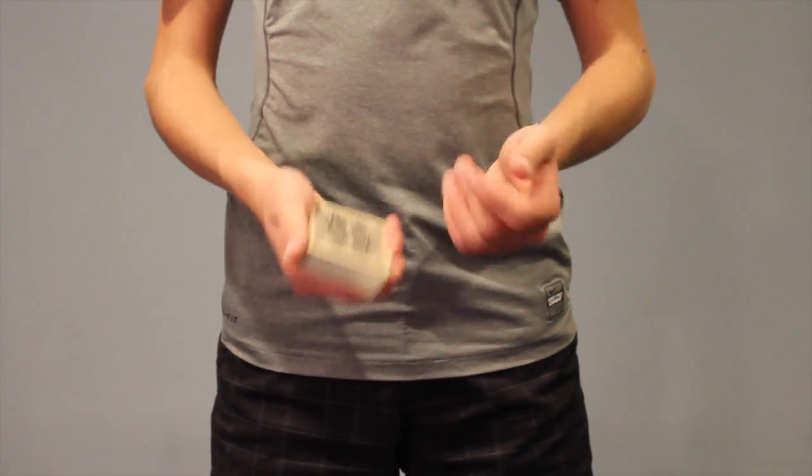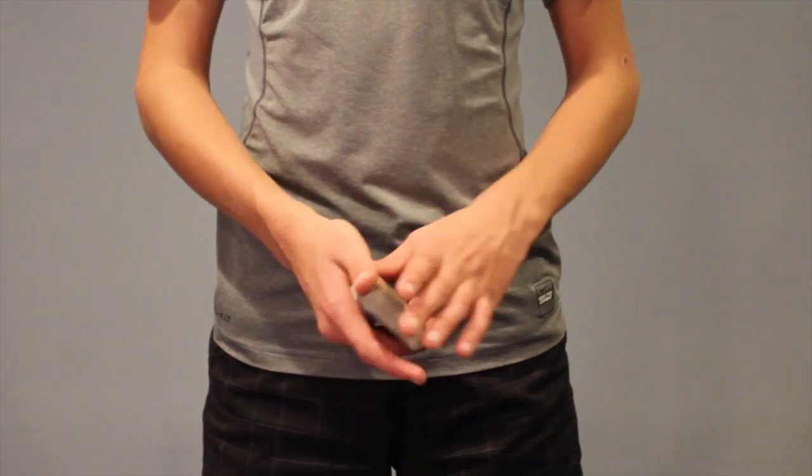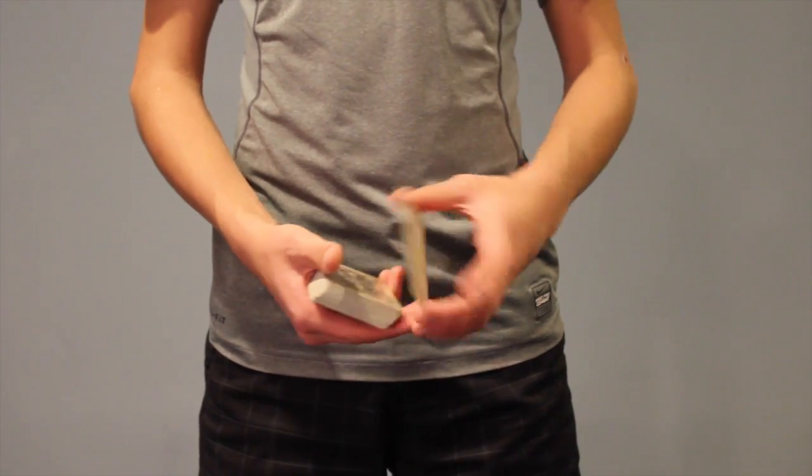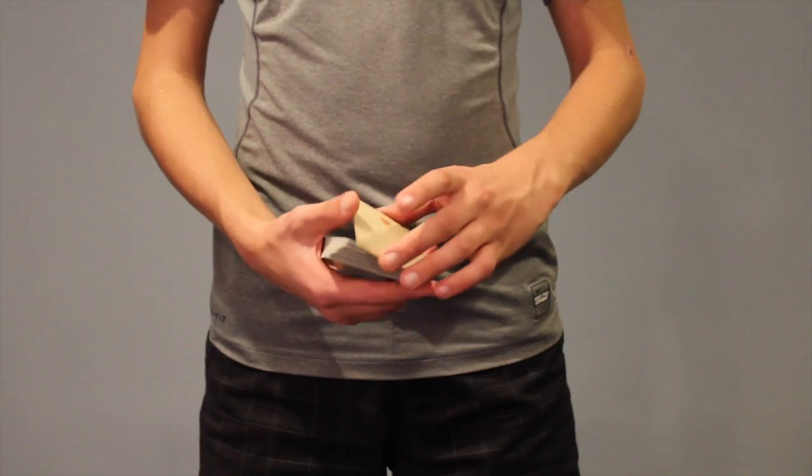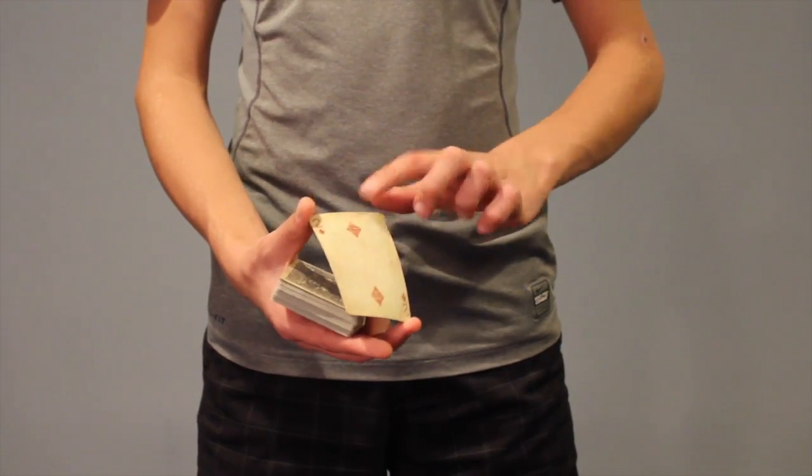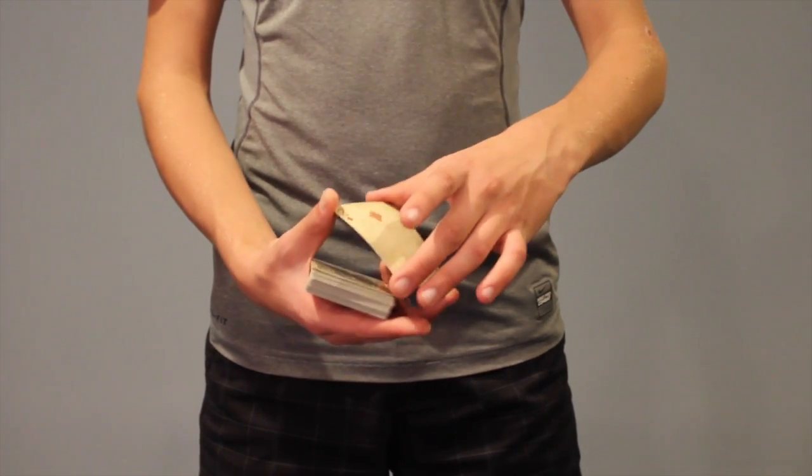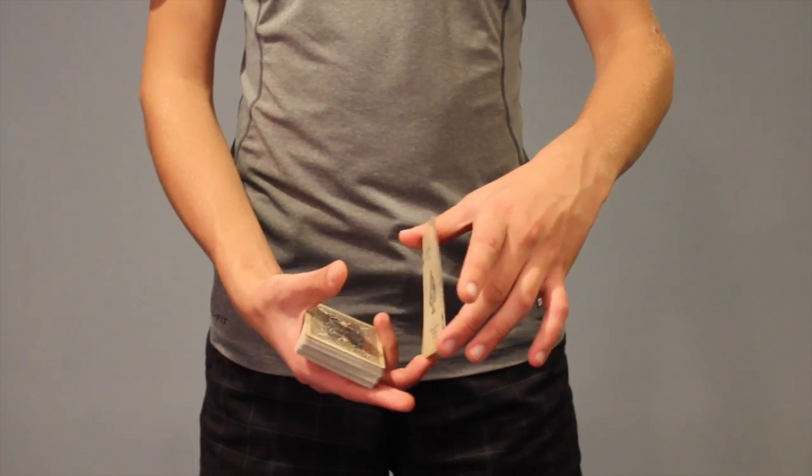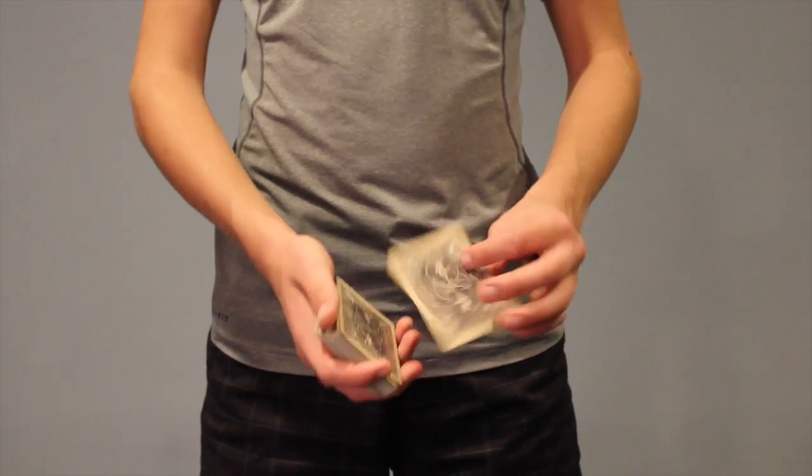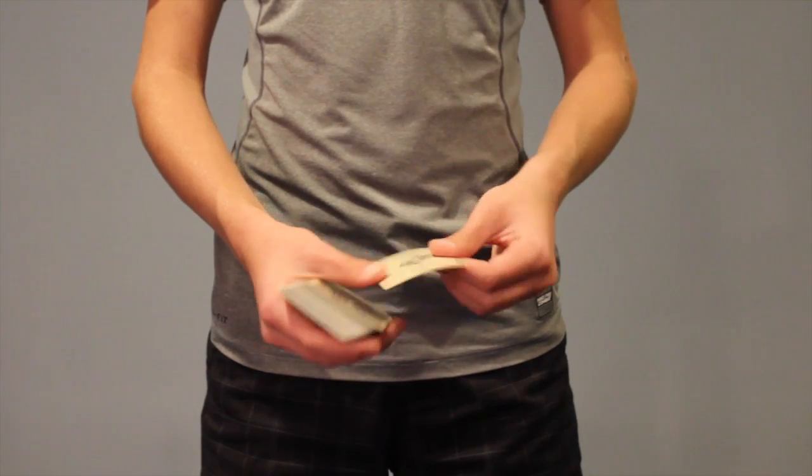Okay guys, for the next color change, this is the shape shifter color change. And I've actually taught this on my channel already, so I'm not going to go too in depth. But basically the idea is, you start out the same way with the twirl change. You're going to grab the corners with your thumb and middle finger, and adjacently grab with your thumb and middle finger on the other hand. And all you're doing is spinning it off like this, dropping it back on top, losing that card, and showing this card to the person. So you could check that out on my channel if I didn't explain it well enough already.